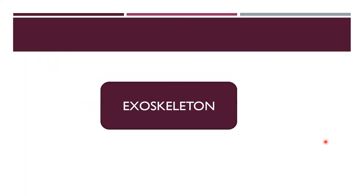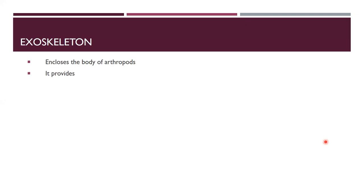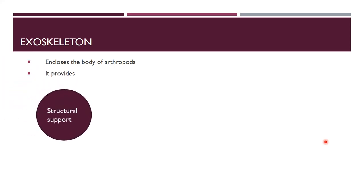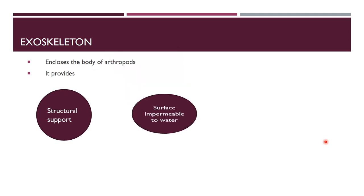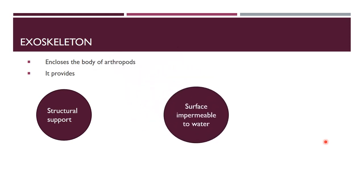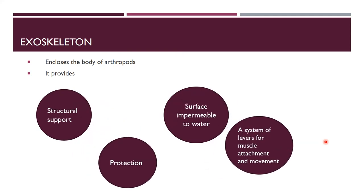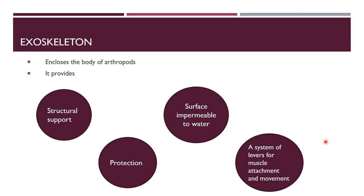Now we are moving towards the exoskeleton of arthropods. The exoskeleton covers the whole body. It supports the arthropod body. The surface of the exoskeleton is impermeable to water, so the body is externally impermeable to water. It provides external protection. The last function is a system of levers for muscle attachment and movement.